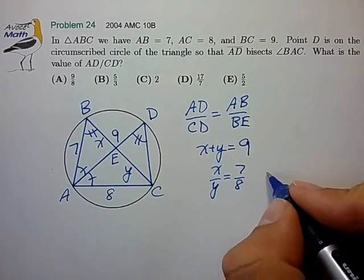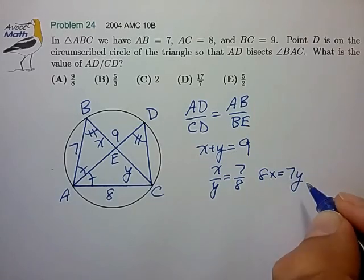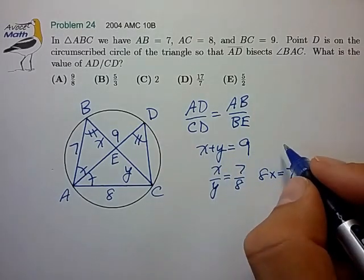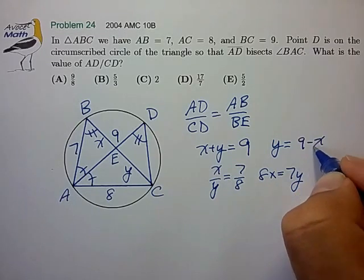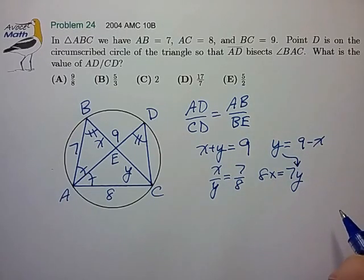Cross multiply, 8X is equal to 7Y. And from the first equation, we know that Y is equal to 9 minus X. We can substitute that in.